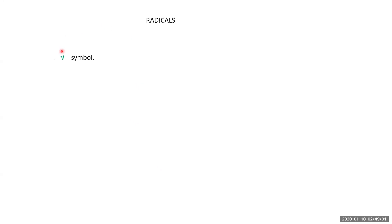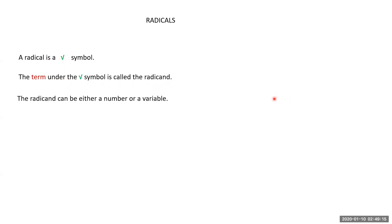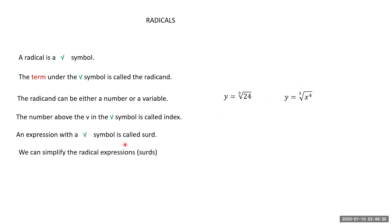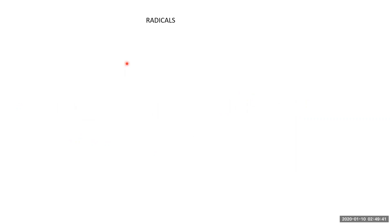The radical is the symbol itself. The term under the radical symbol is called the radicand — it can be either a number like 24 or a variable like x to the power 4. The number above the 'v' in the radical symbol is called the index; for example, 3 is the index in a cube root. An expression with a radical symbol is called a surd, and we can simplify such expressions.